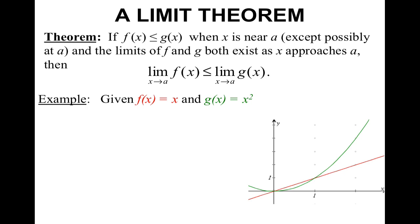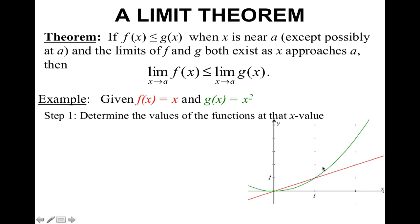Graphically, we can see with these two functions, f of x equals x and g of x equals x squared. As you can see just by the graph, f of x is larger than x squared between 0 and 1, and then it switches. So if we were to evaluate this, we would first determine the values of the functions at the given x value. I'm specifically looking at x equals 2. So as we can see here, f of x at 2 is 2, and g of 2 is 4. So we just showed that f of x is less than or equal to g of x.